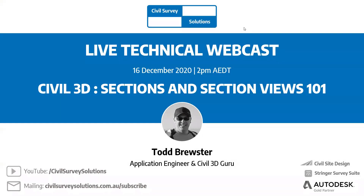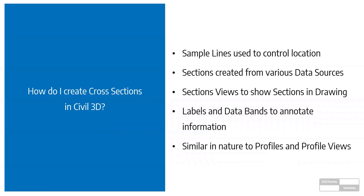Today we're going to look at Civil 3D Sections and Section Views — basically cross-sections in Civil 3D. They have a different aim but are essentially looking at cross-sectional data from your model. There are some elements you need to create to access that information. You use what's called a sample line to control where you want your sections. The section is the information extracted from a variety of data sources — terrain models or corridors typically.